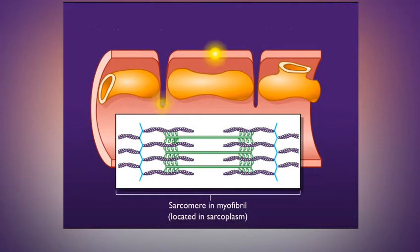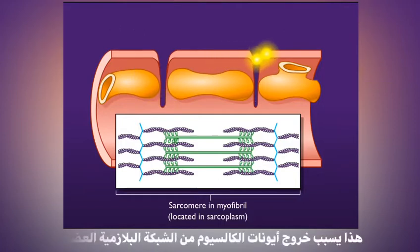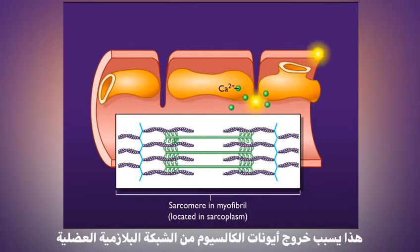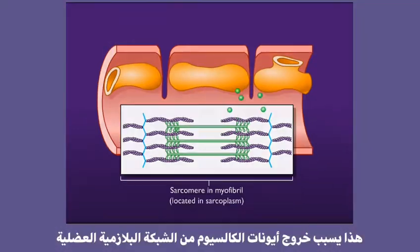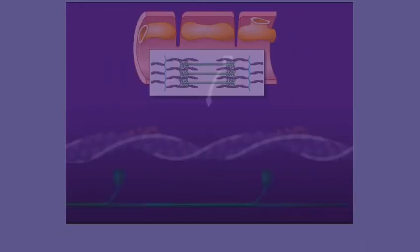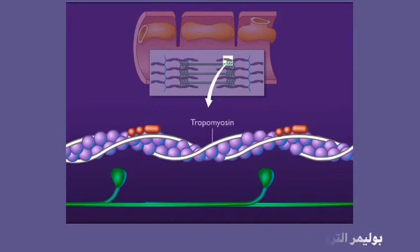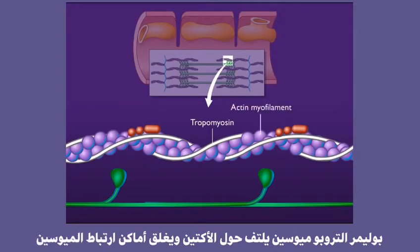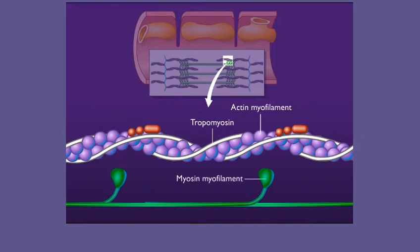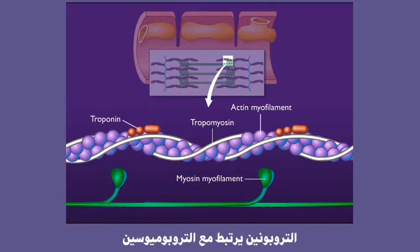The depolarization of the T-tubule membrane causes nearby voltage-gated calcium ion channels on the sarcoplasmic reticulum to open. Long filamentous tropomyosin proteins lie on two sides of the actin myofilament, covering up the sites where myosin can bind to the actin myofilament. Globular troponin proteins are attached to the tropomyosin.